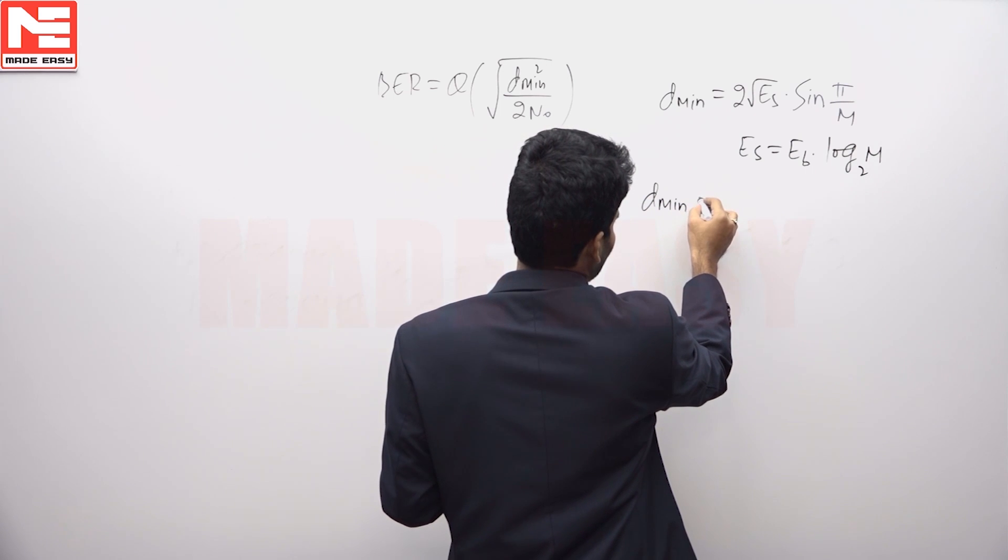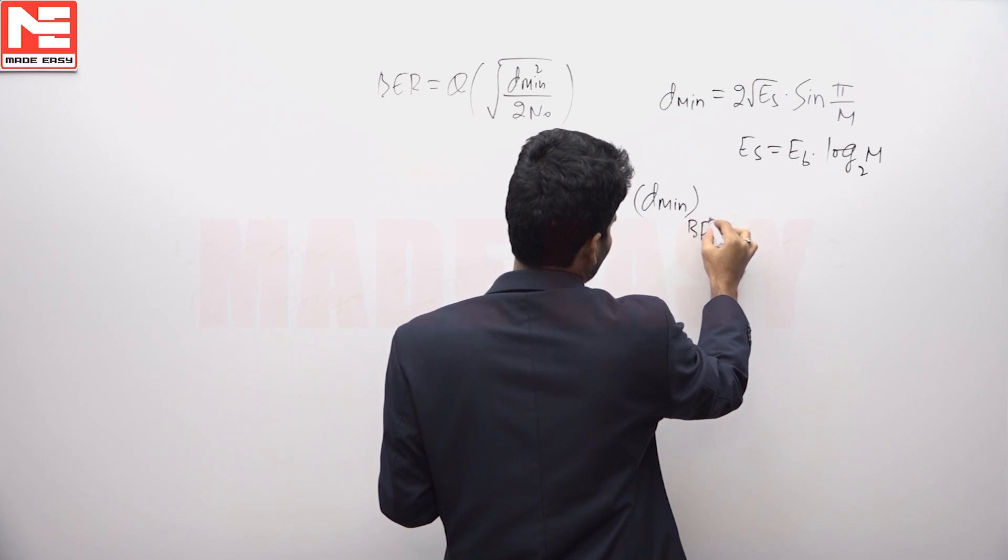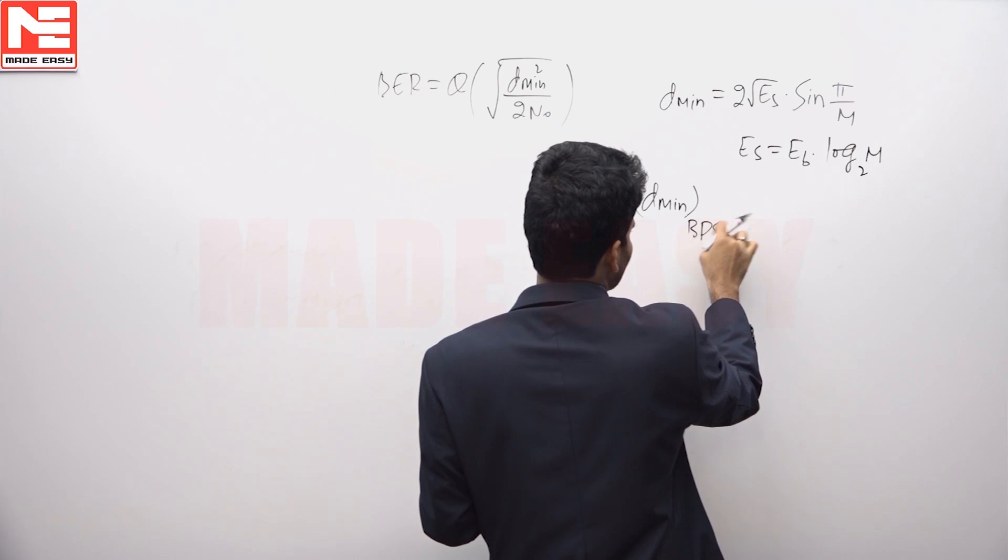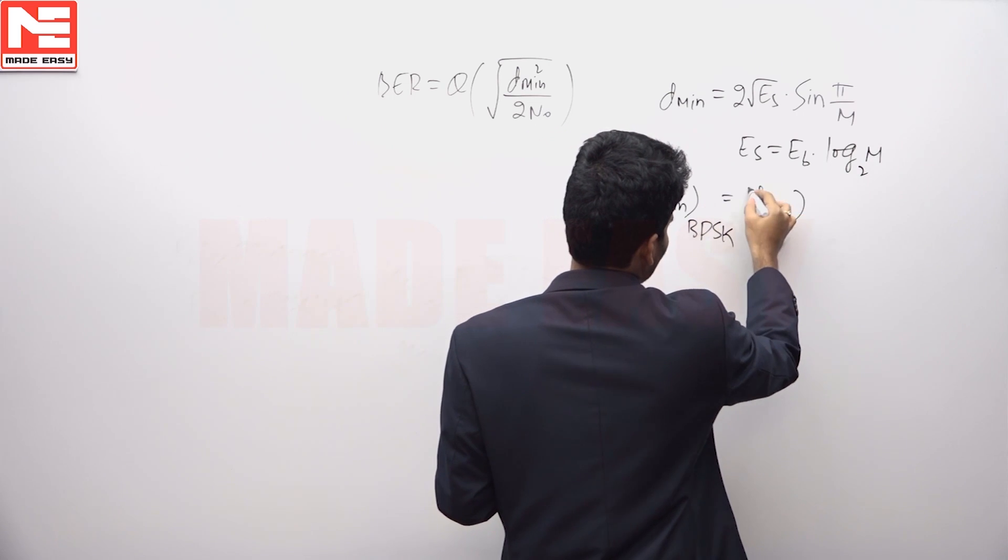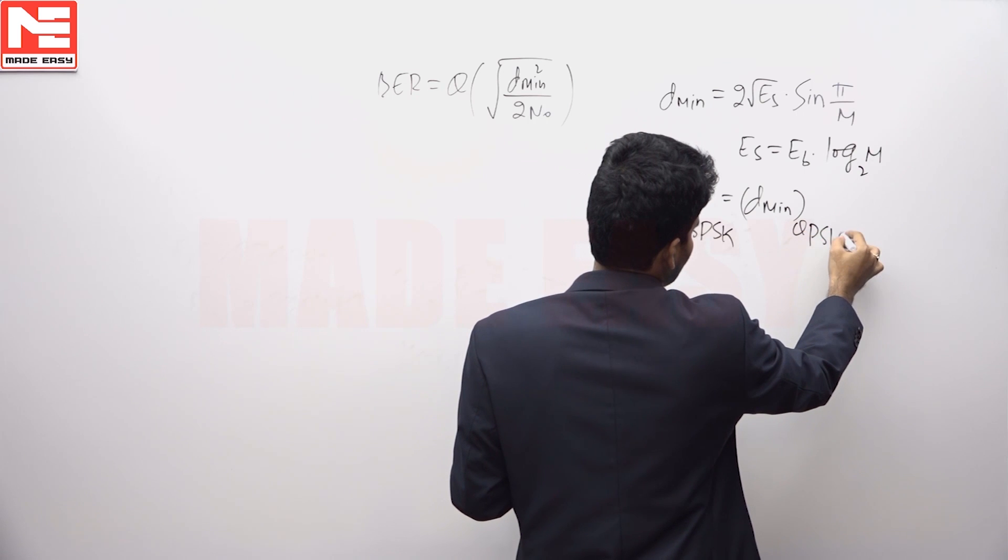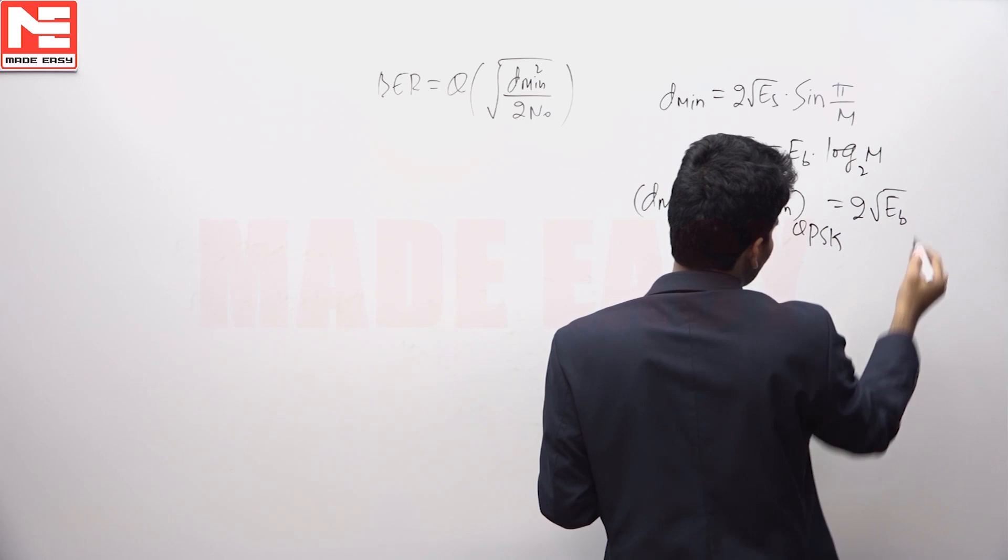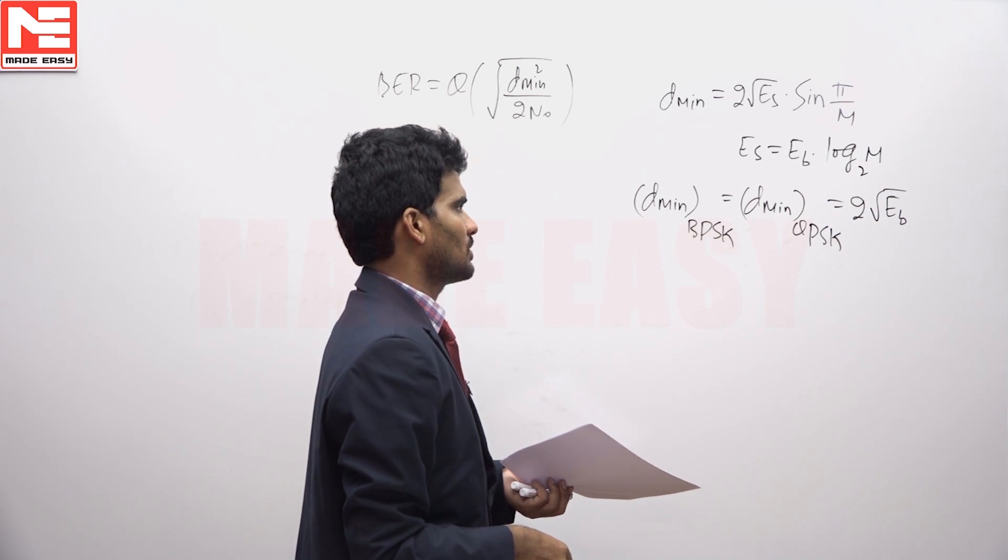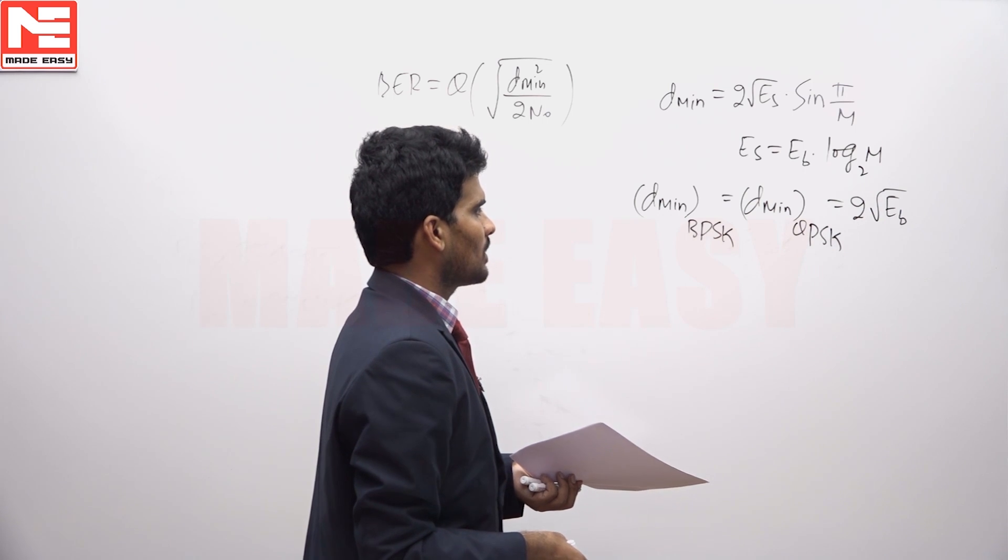For BPSK, D min is for two-array PSK, so M equals 2. For QPSK we get the same expression: 2 root EB. The expression will be the same, 2 under root of EB, where EB is average bit energy.